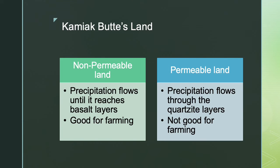During rainstorms, precipitation filters through loess soil until it reaches a completely resistant layer of basalt. Loess soils overtopping the quartzite substrate do not react the same way to rainfall. When water percolates the soil it reaches a substrate which is very permeable. Therefore, unlike the loess soil, quartzite substrate is not efficient for farming. Thus, farming cannot occur at Kamiak Butte, whose deposit is rich in quartzite.